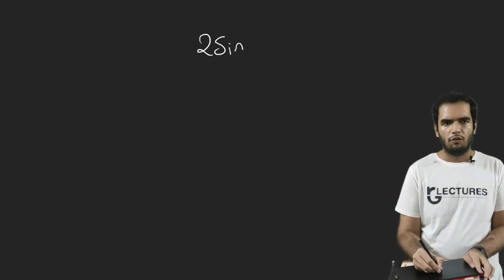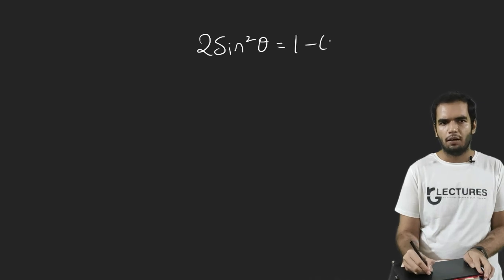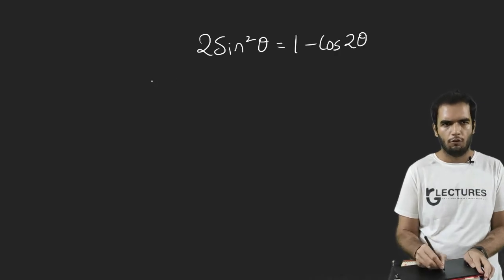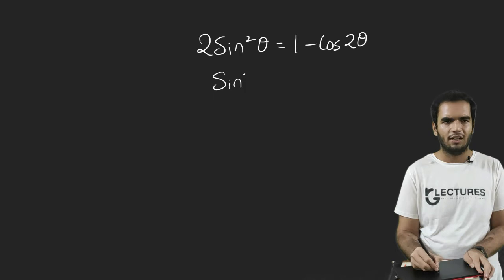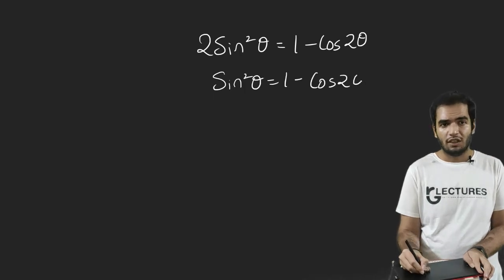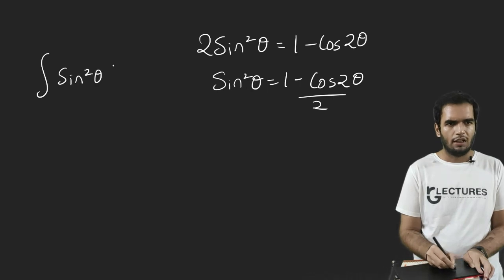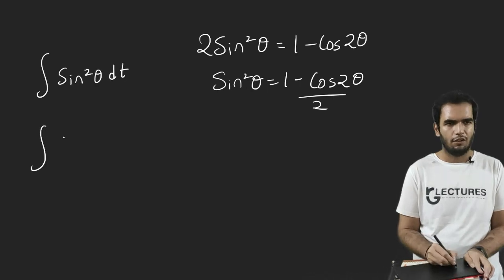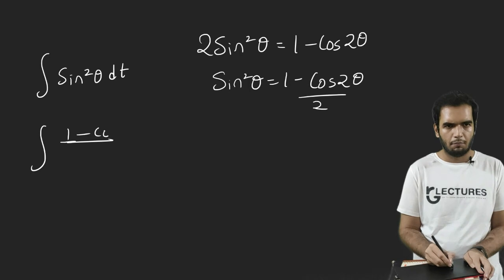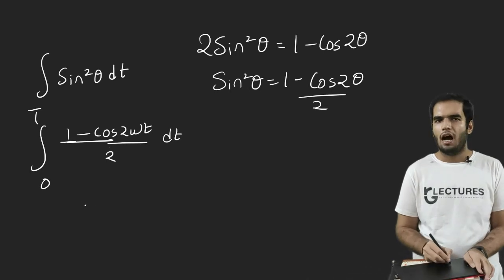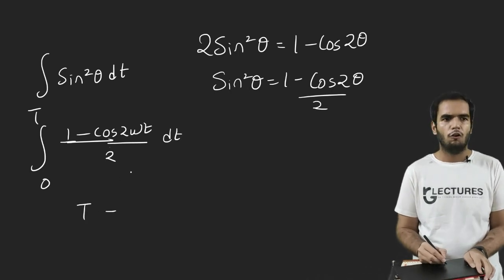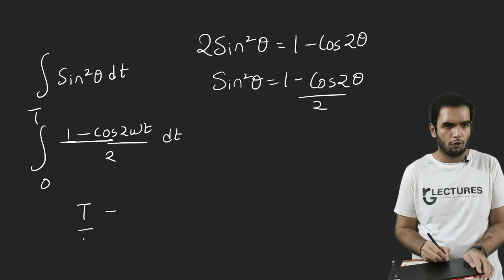So sine square omega T. Now, I know that two sine square of theta equals one minus cos of two theta. So basically, I can write sine square theta equals one minus cos of two theta by two. So in integration, I can write sine square theta dT equals half one minus cos two omega T, because theta is omega T here, from zero to T, dT. Integral of half will be T, integral of minus cos, of course, T by two.